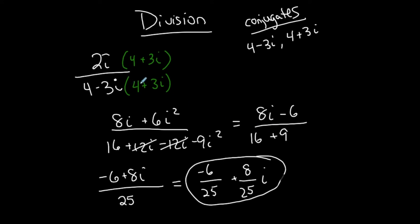So again: take the conjugate of the denominator, multiply the top and the bottom by that conjugate, simplify — you should get no more i's on the bottom, no i squareds, and it should be a complex number in standard form by the end.